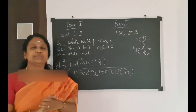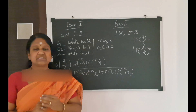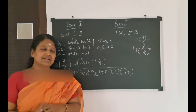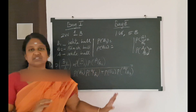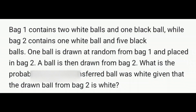We will have a problem in this area today. Bag 1 contains 2 white balls and 1 black ball, while Bag 2 contains 1 white ball and 5 black balls. One ball is drawn at random from Bag 1 and placed in Bag 2. A ball is then drawn from Bag 2. What is the probability that the transferred ball was white, given that the drawn ball from Bag 2 is white?